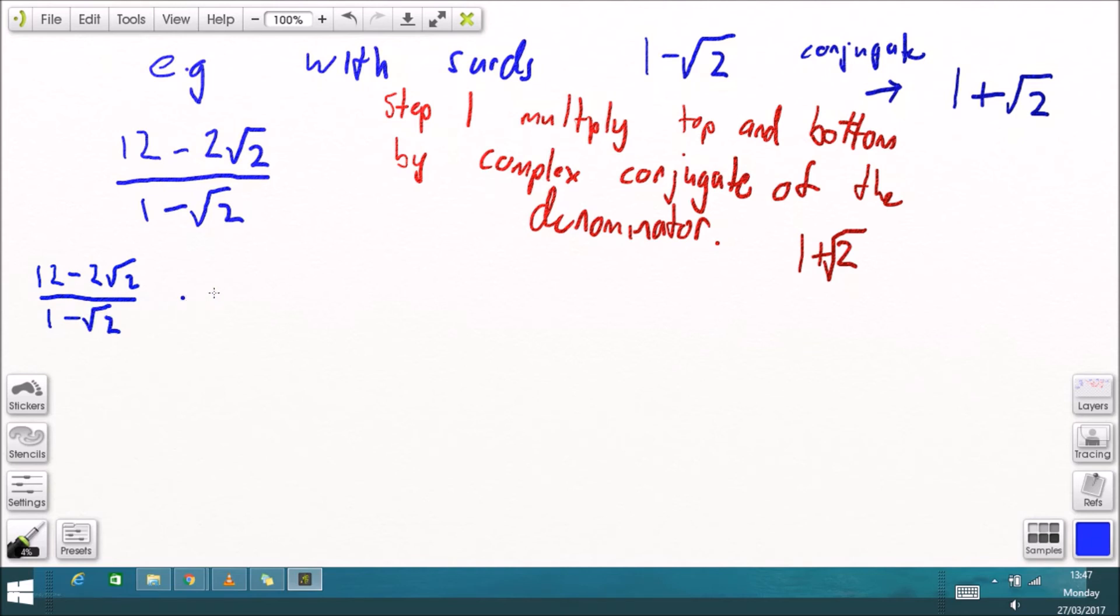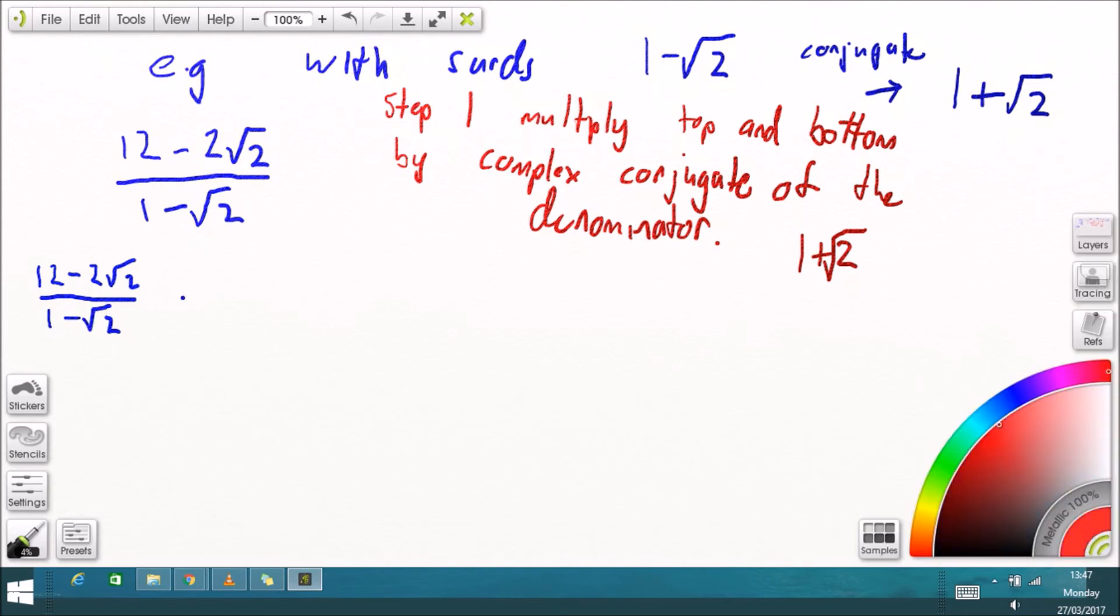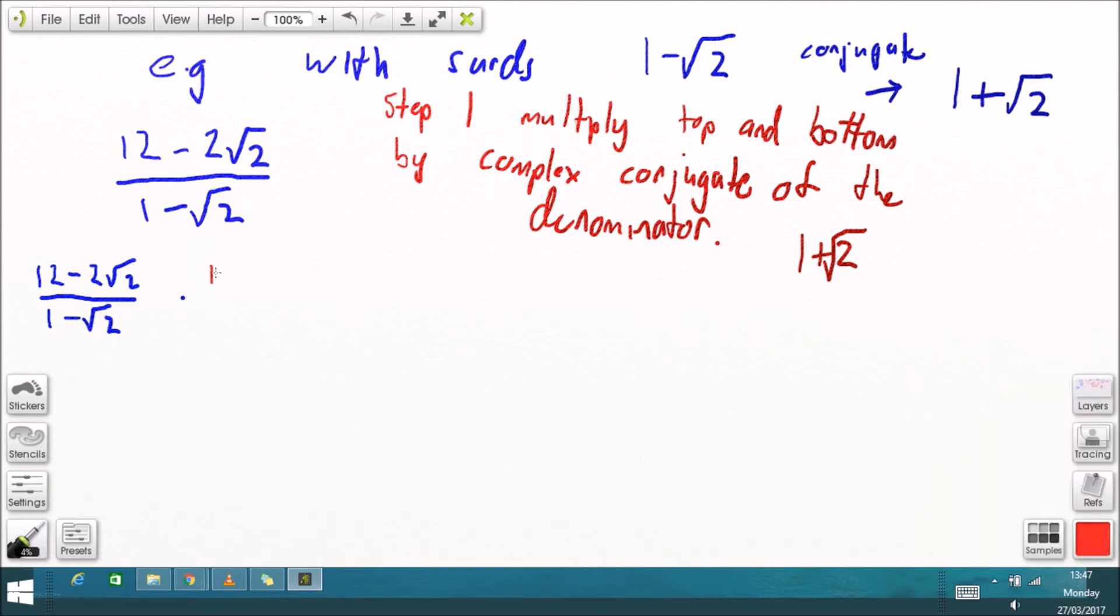Okay so I'll just write this out in full and kind of slowly so you can see it. Once done at this speed you don't need to do it like this you could do everything all at once but just for explanation purposes here I am multiplying the top and the bottom by one plus root two the conjugate of the denominator